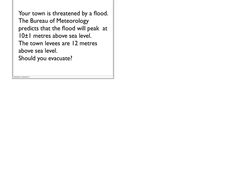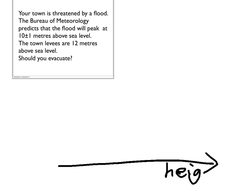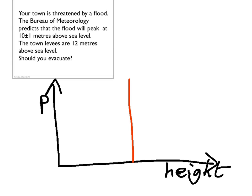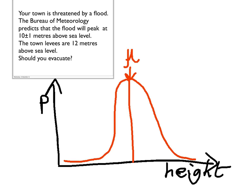So we can plot the height and the probability. Assuming that the Bureau of Meteorology used the standard uncertainty, which they are allowed to and in fact generally do, that's telling us that the probability distribution function for the flood peak height is going to be a Gaussian curve, looking something like that. With a mean up here, mu equals 10, and a standard deviation of 1 metre.